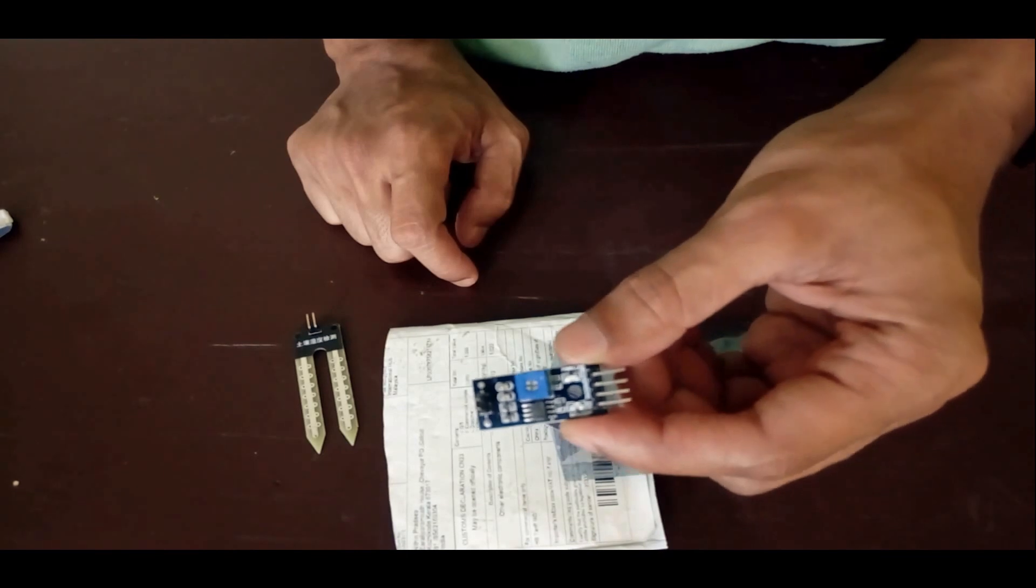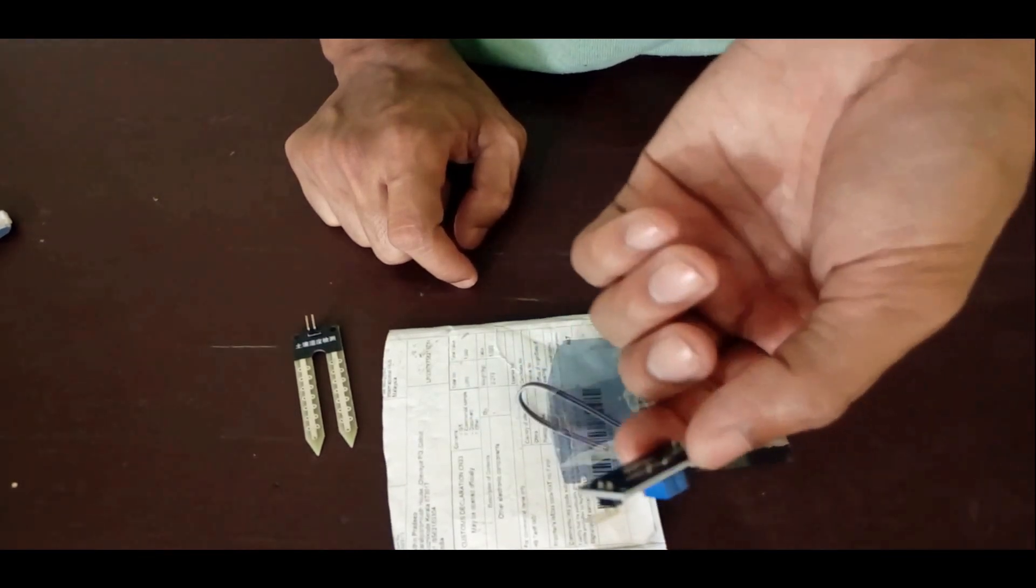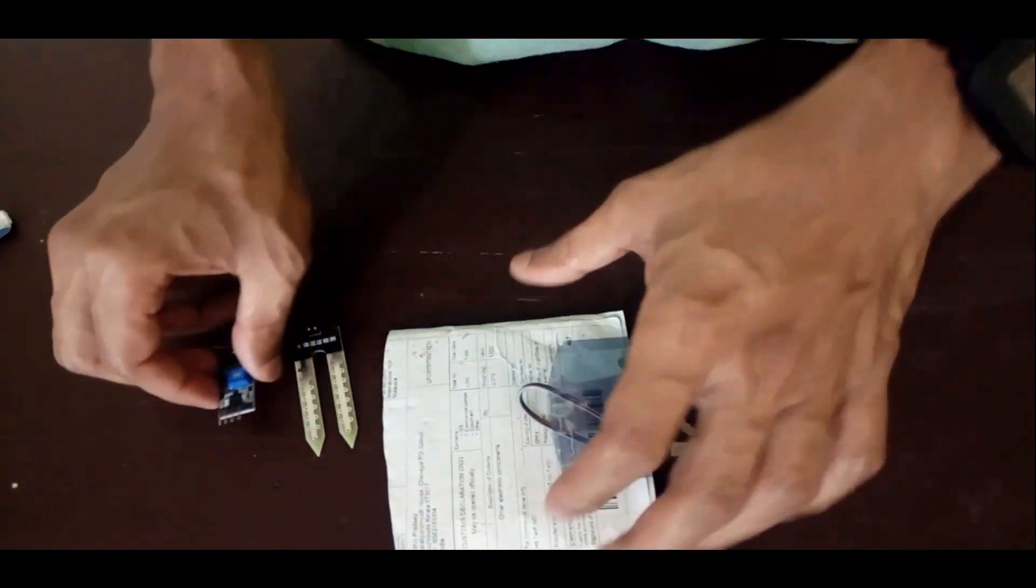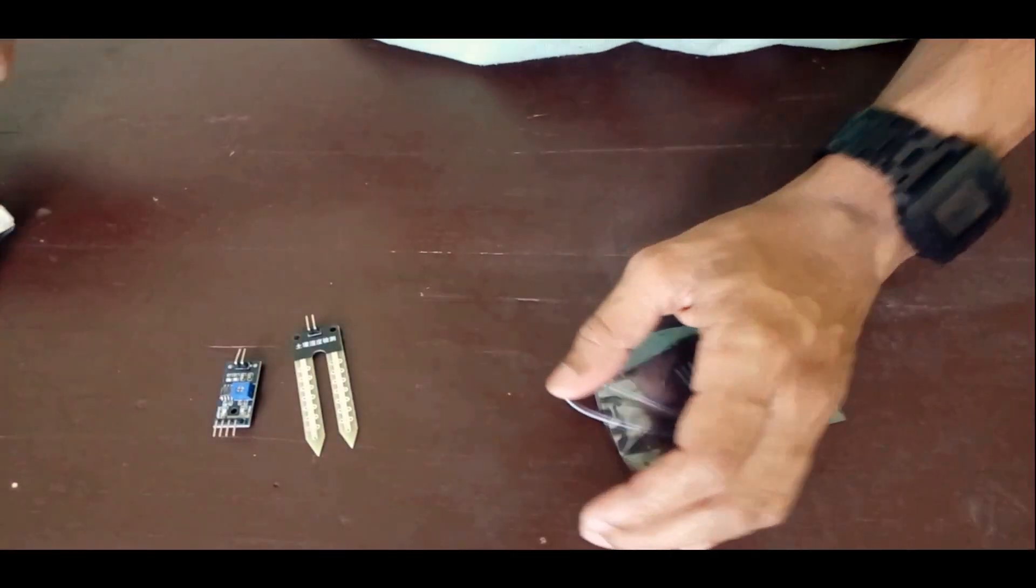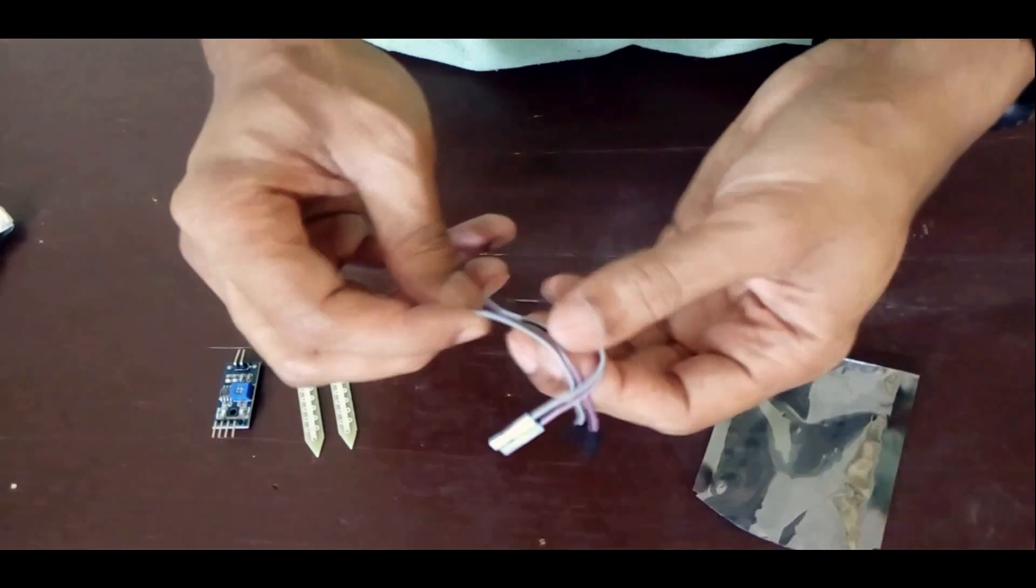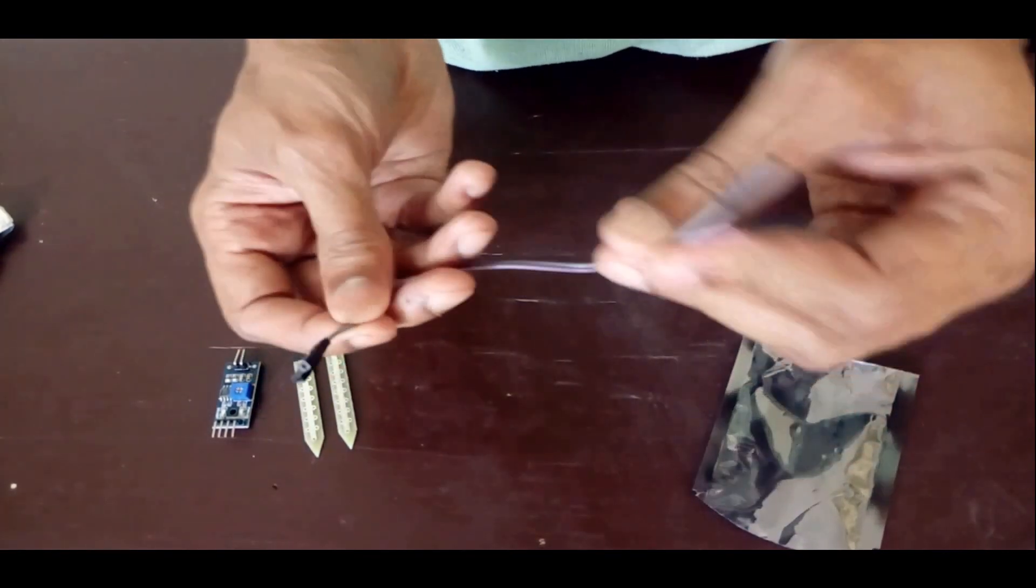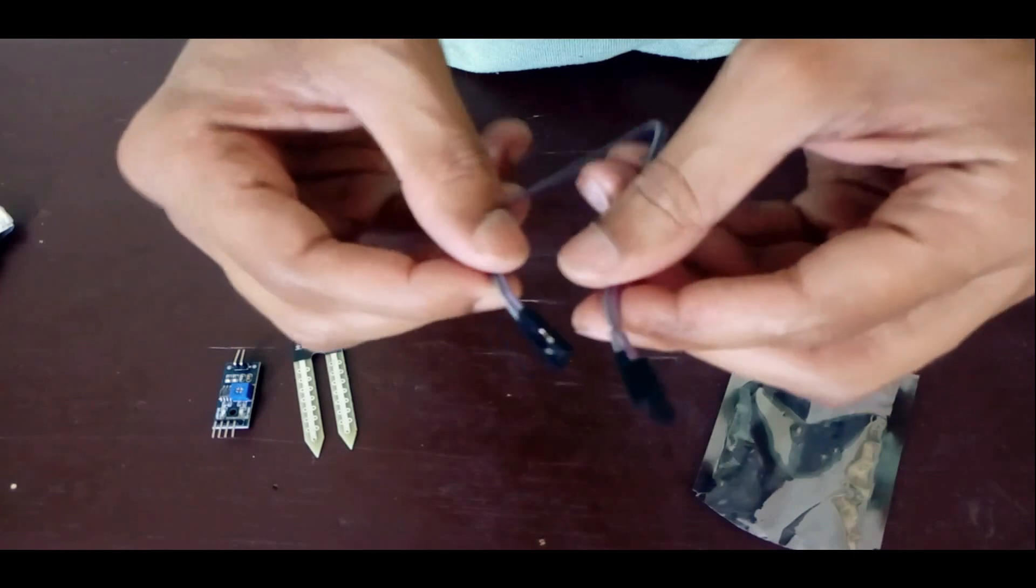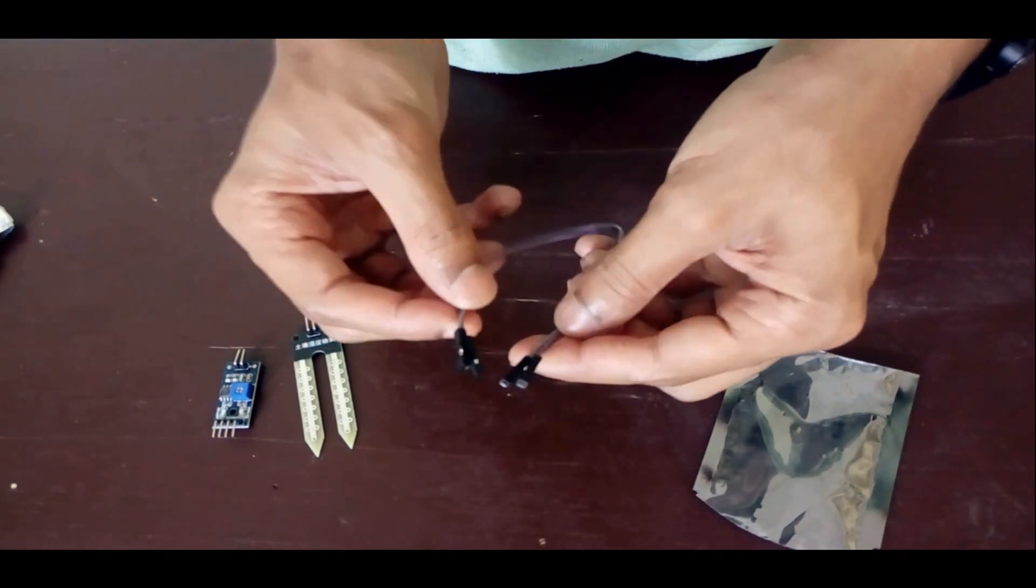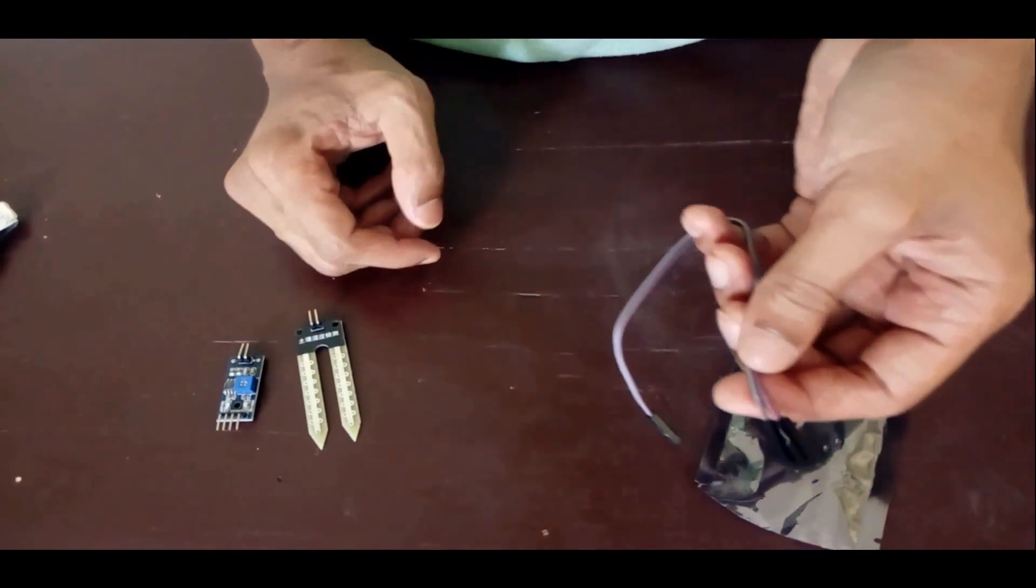This module has got two pins to output analog and digital signals and has got two LED indications. They have also included a pair of jumper wires. This is to connect the probe to the module.